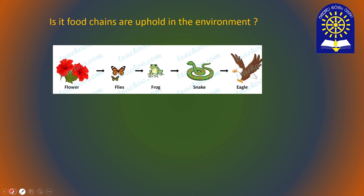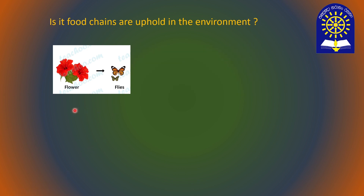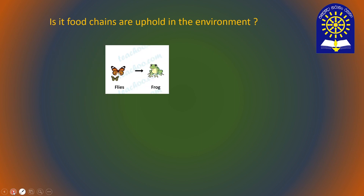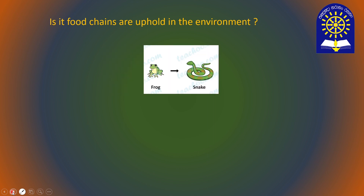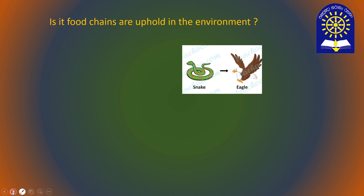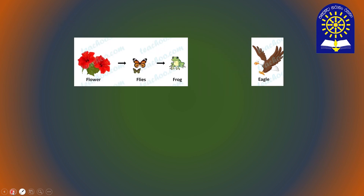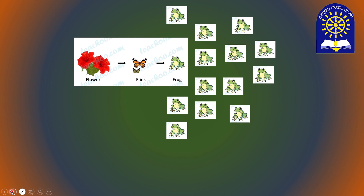Let's look at this food chain. Suppose the food chains are upheld in the environment — the butterfly feeds on the hibiscus, the frog eats only butterflies, the snake eats only frogs, and the eagle eats only snakes. If in any case all the snakes die, what happens? Eagles will die with hunger, and frogs become more and more.